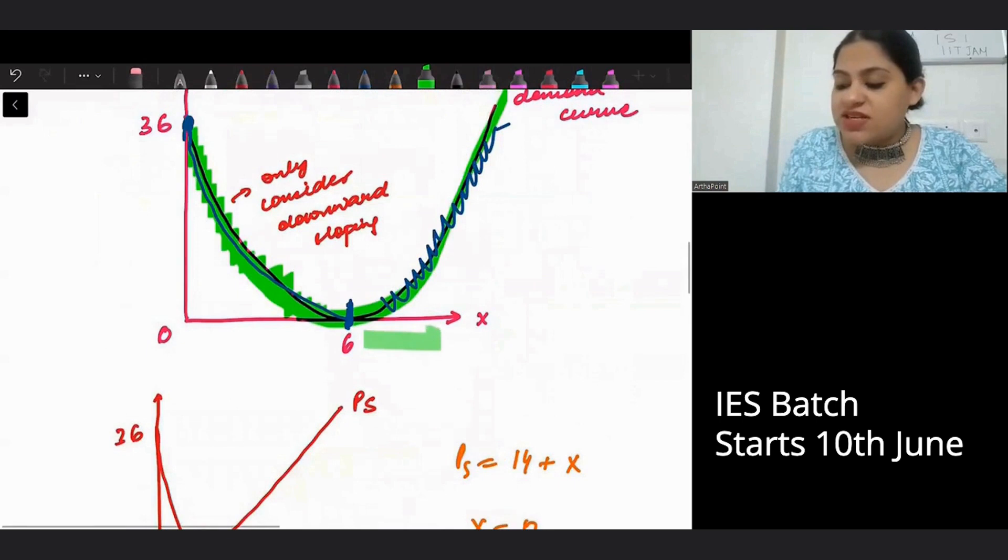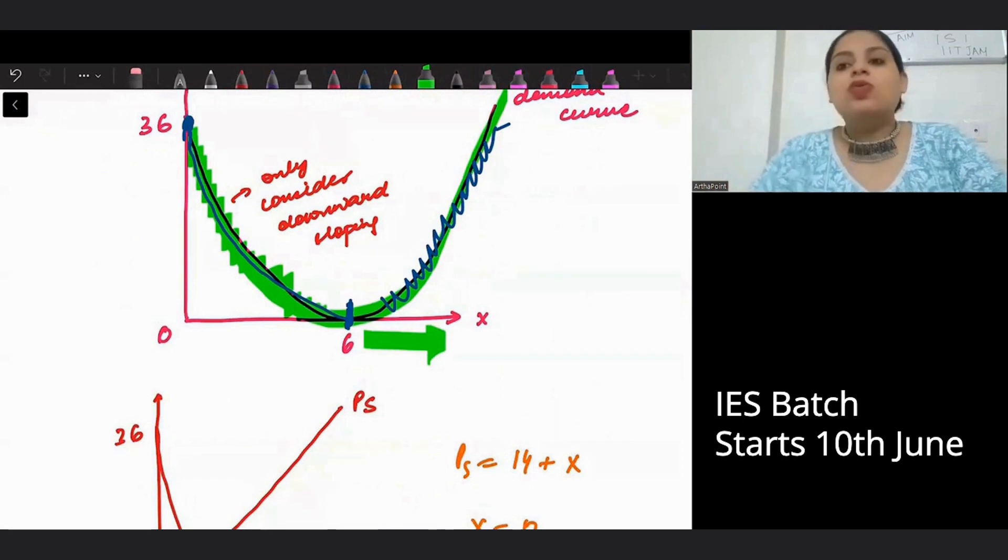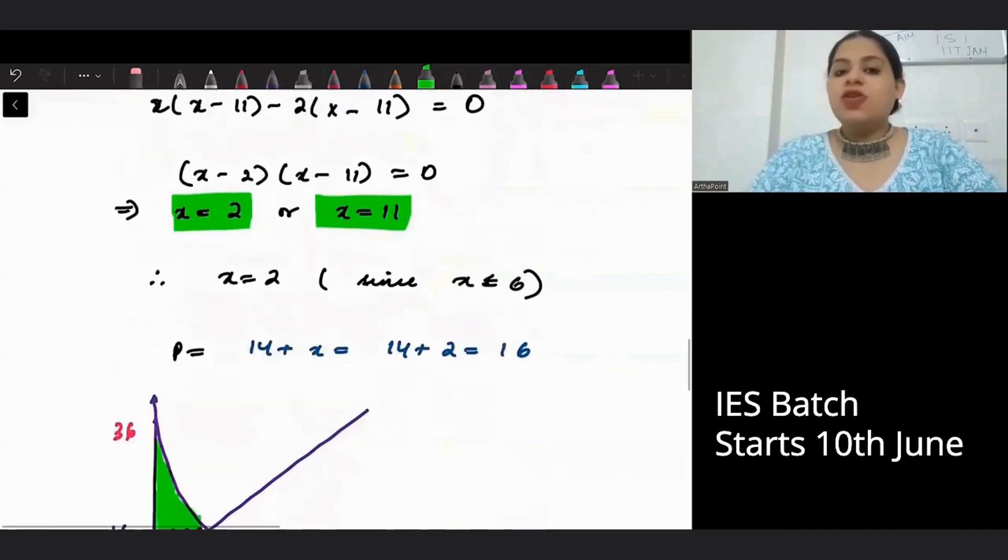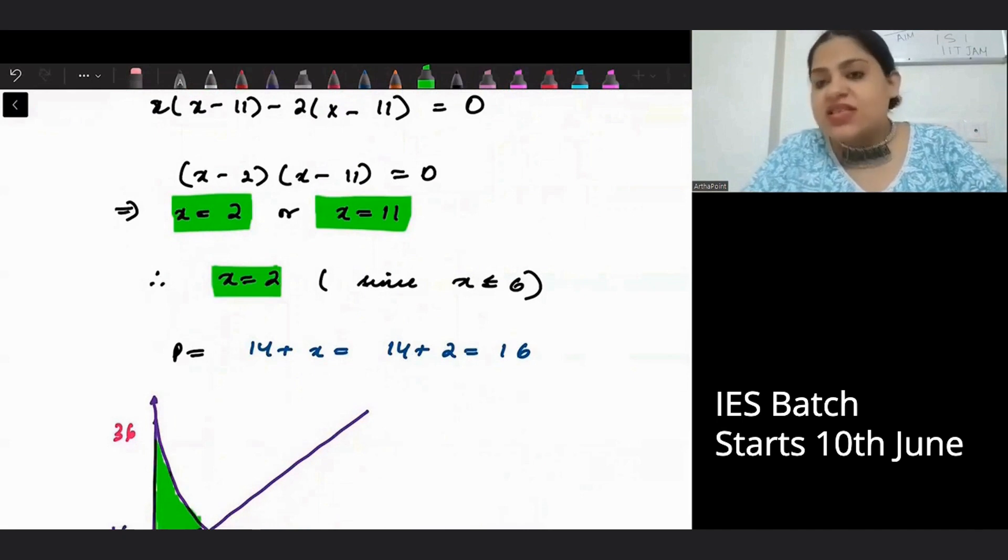But x cannot exceed 6. Because then my demand curve will be upward sloping. I want my demand curve to be in the downward sloping part. So x cannot exceed 6. So the only possible value of x will be 2.